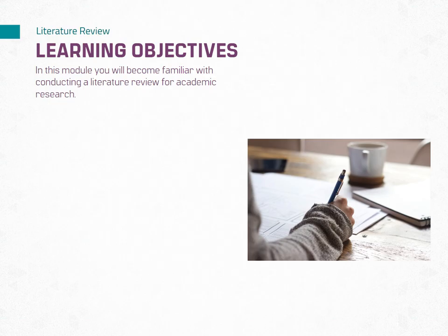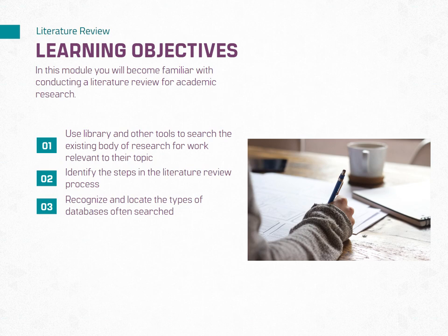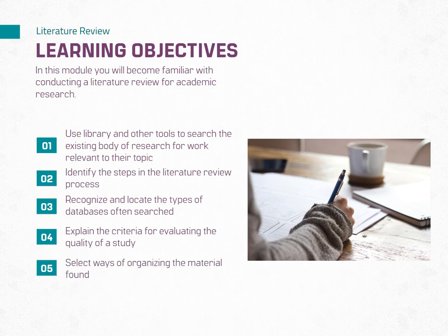In this module, you will become familiar with conducting a literature review for academic research. This module is split into four parts. By the end of this module, the learner should be able to use library and other tools to search the existing body of research for work relevant to their topic, identify the steps in the literature review process, recognize and locate the types of databases often searched, explain the criteria for evaluating the quality of literature, and select ways of organizing the material found.